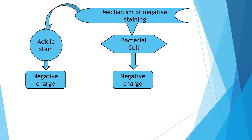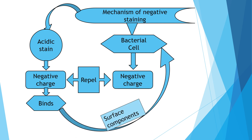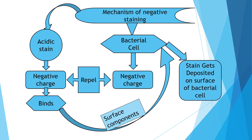Since both charges are negative, they repel from each other. However, the negative charge of the acidic stain binds to the surface components of the bacterial cell, and hence the stain gets deposited on the surface of the bacterial cell. This is the mechanism of negative staining.